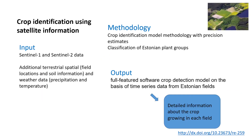The next theme was monitoring of the use of agricultural land, or shortly just the land work package. Their prototype for crop identification using satellite information used Sentinel-1 and Sentinel-2 data and additional terrestrial spatial, soil information, and weather data — precipitation and temperature. Scientists developed the crop identification model methodology with precision estimates and classification of Estonian plant crops. The output is a fully featured software crop detection model on the basis of time series data from Estonian fields. It's very practical for PRIA, the Agricultural Registers and Information Board. The next speaker after the break is the head of the land work package, and I know they also used EstHub's capabilities to develop prototypes.